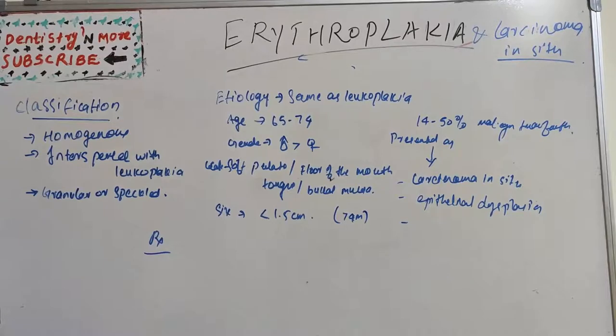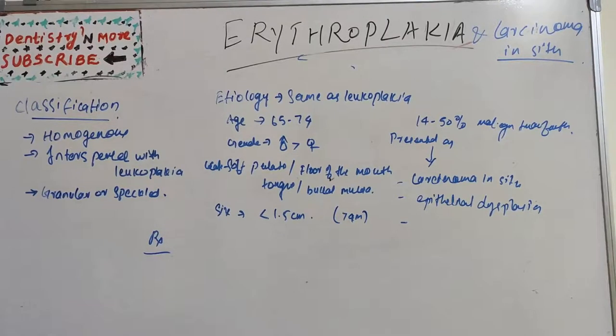Pre-cancerous or pre-malignant lesions are leukoplakia, erythroplakia, carcinoma in situ, dyskeratosis follicularis, and Bowen's disease. Whereas pre-malignant conditions are most commonly OSMF or lichen planus, syphilitic glossitis, sideropenic dysphagia, and dyskeratosis congenita.